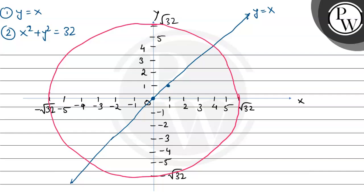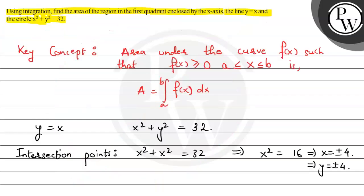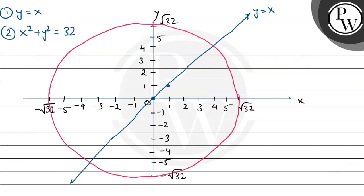The region of concern is in the first quadrant, enclosed by the x-axis, the line y equals x, and the circle x squared plus y squared equals 32. That is the region bounded by the x-axis, the equation of the circle, and the equation of the straight line.